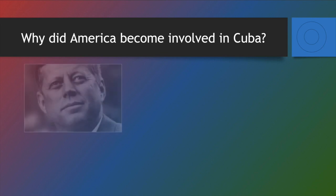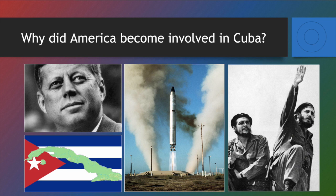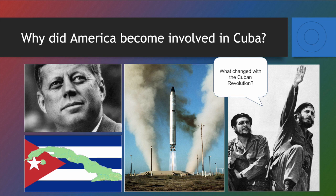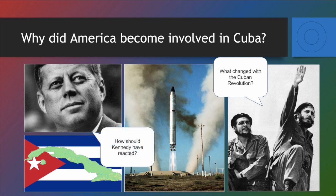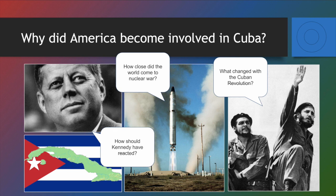The second focus point is about Cuba. Let's look at some photos to get our thoughts moving. First question: what changed with the Cuban Revolution? The Cuban Revolution is when Fidel Castro, with the help of others like Che Guevara, helped to change Cuba from a capitalist society under the thumb of the United States to a communist society. Why was that significant to the United States? We will also focus on President Kennedy and how he should have reacted to events in Cuba — specifically the Cuban Missile Crisis and the Bay of Pigs invasion — and finally, how close did the world come to nuclear war?